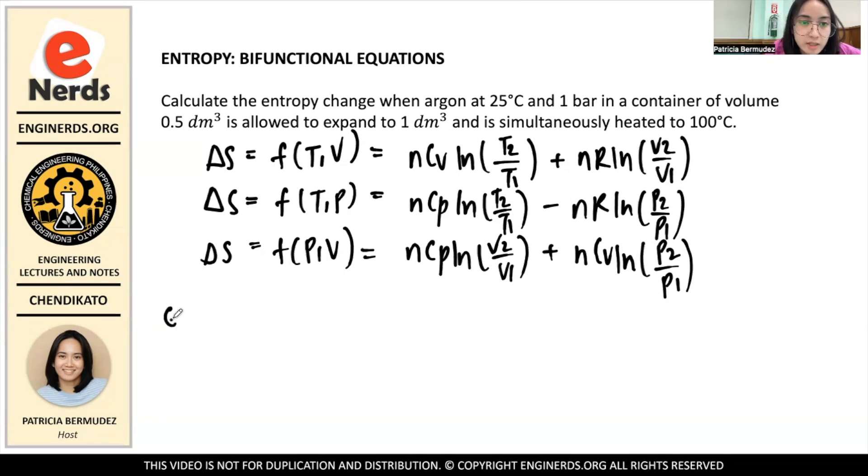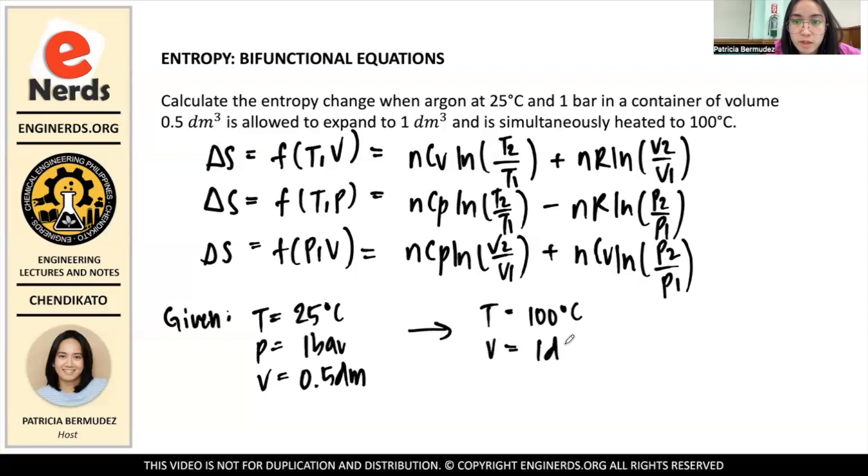So the given is: first, 25 degrees Celsius for temperature, and then the pressure is 1 bar, and then your volume is 0.5 dm³. And then it becomes: your temperature becomes 100 degrees Celsius, and then your volume changes to 1 dm³.